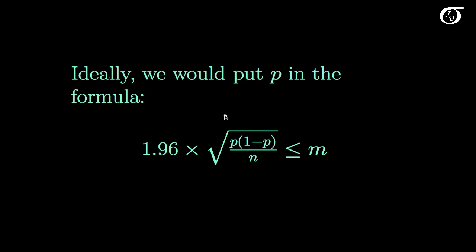Ideally we would put the real value of P in this formula. Now we don't know the true value of P, otherwise we wouldn't be trying to estimate it in the first place. But let's pretend we do for a moment. Then this would be our margin of error for our confidence interval, and we would want that quantity to be less than or equal to this amount M.